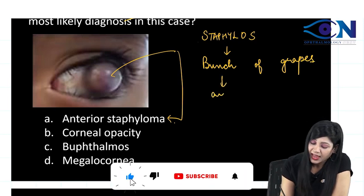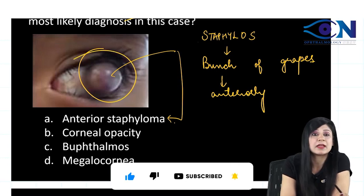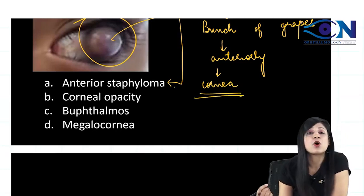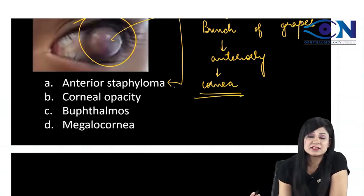And when it is present anteriorly, bunch of grape-like appearance, you can see this bunch of grape-like appearance anteriorly. It can be present in the cornea, then this is called as a corneal staphyloma or anterior staphyloma.